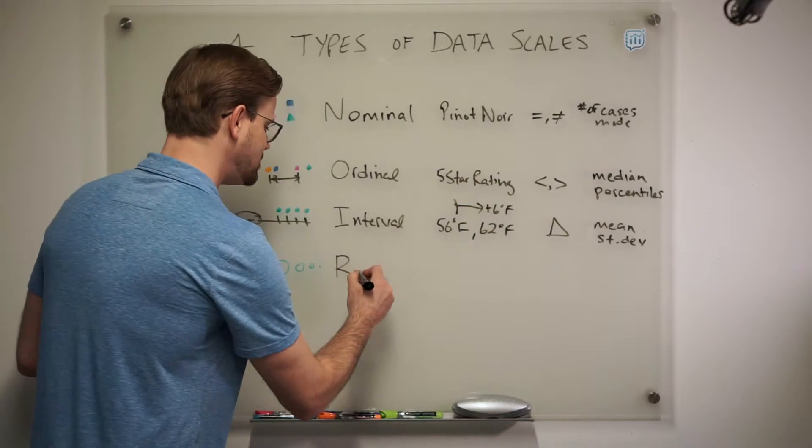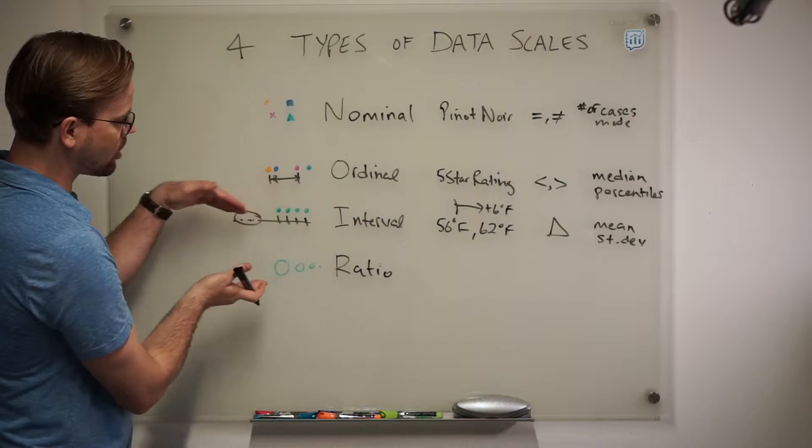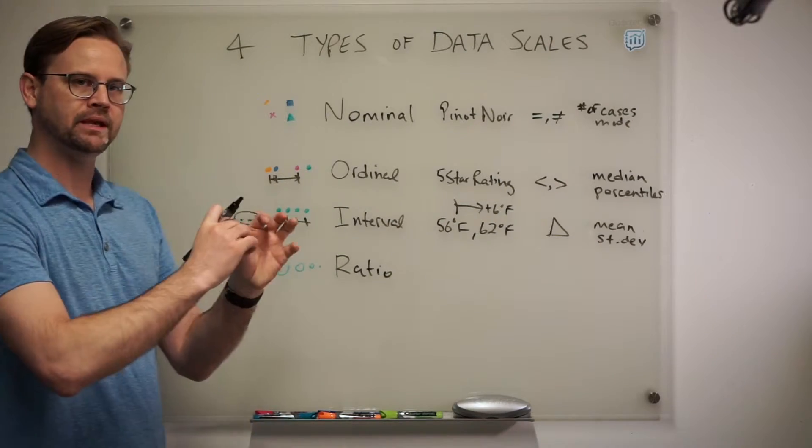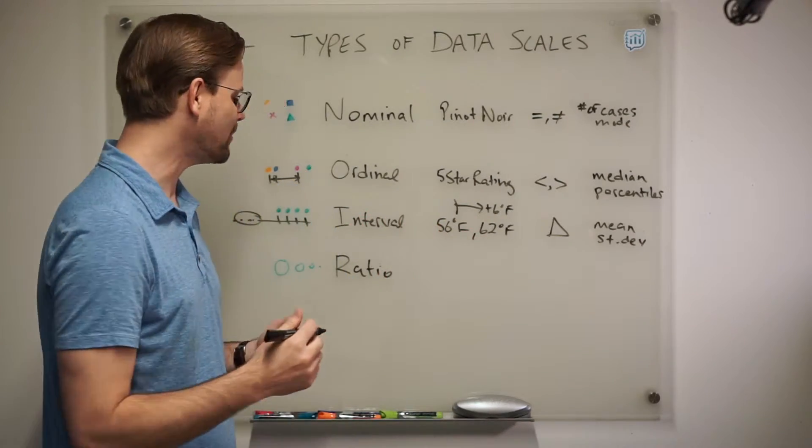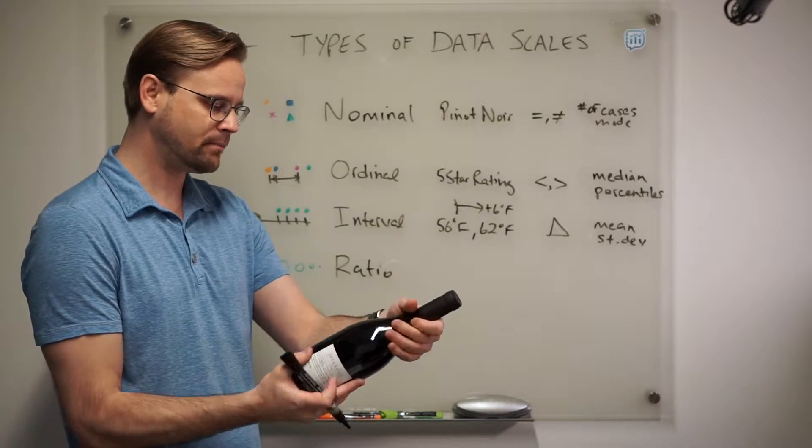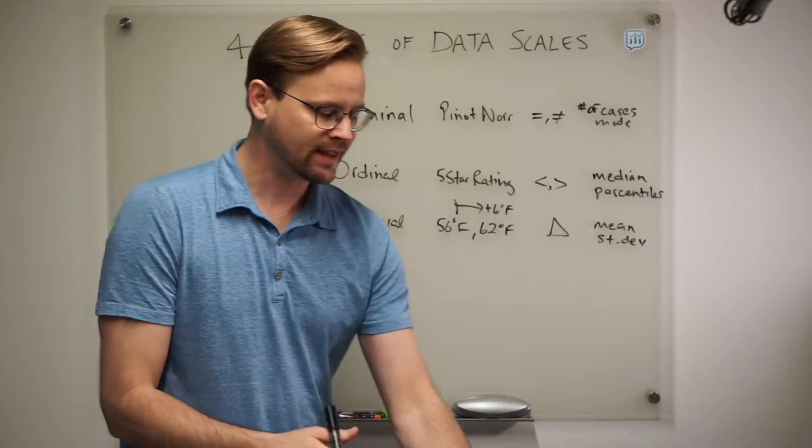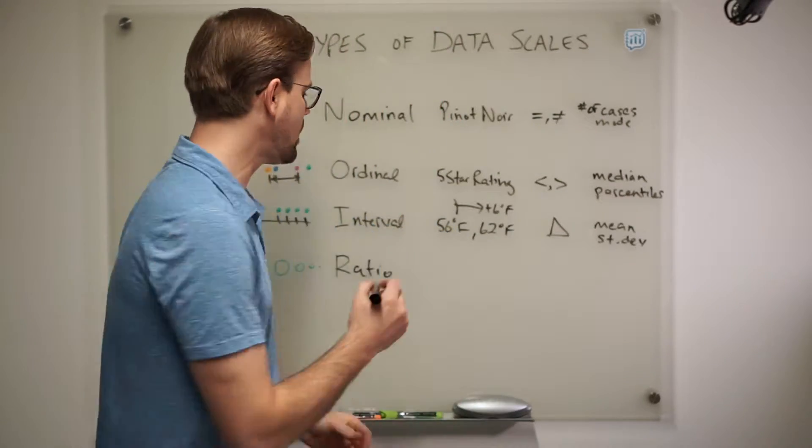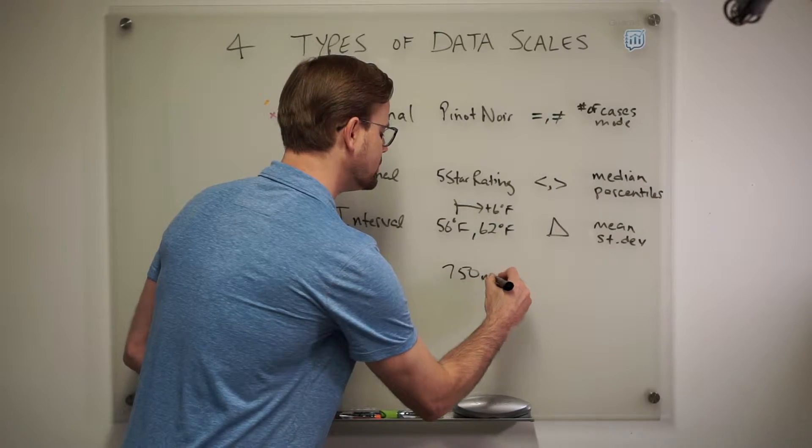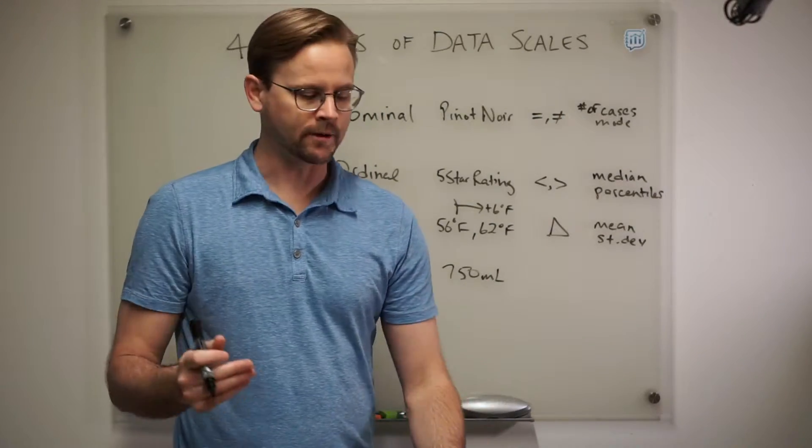But that is how ratio data scales work. And you can see for this, I drew them as larger and smaller circles, because when you get to zero, there's nothing there. And that's true of a ratio data scale type. Like in the example of wine here, maybe I want to take the volume of wine. That's 750 milliliters on the bottle. Well, if I had zero milliliters, the circle went all the way down to nothing, there would be no wine, it would be gone.